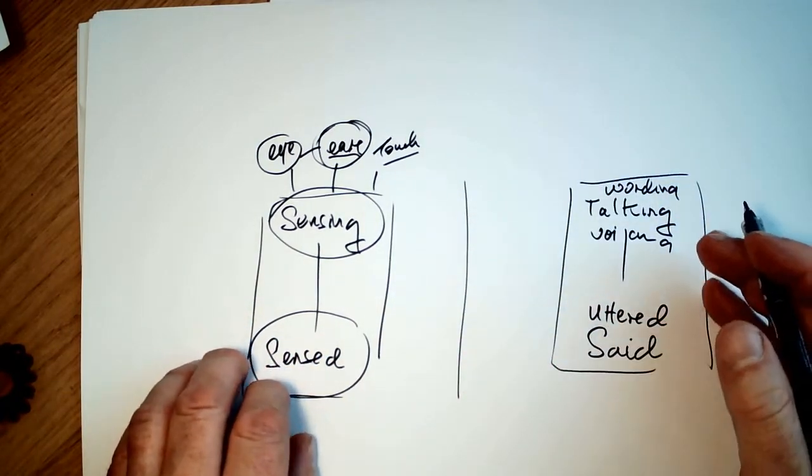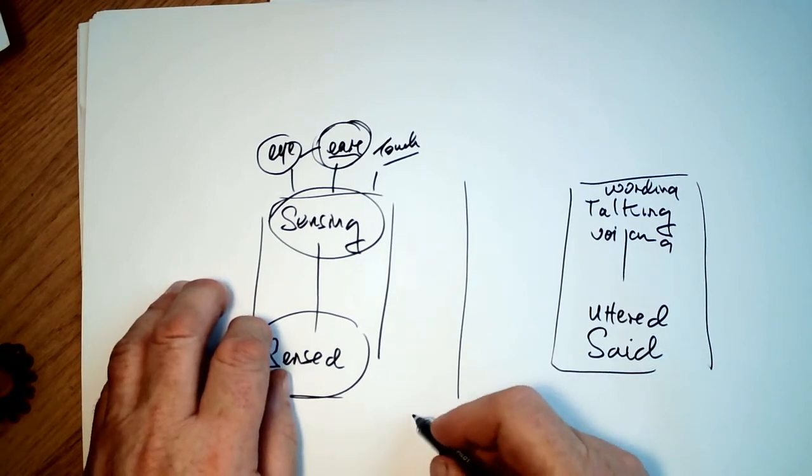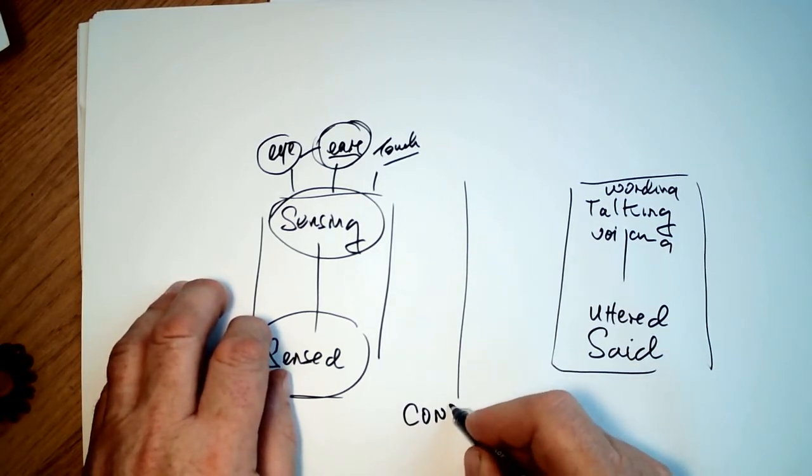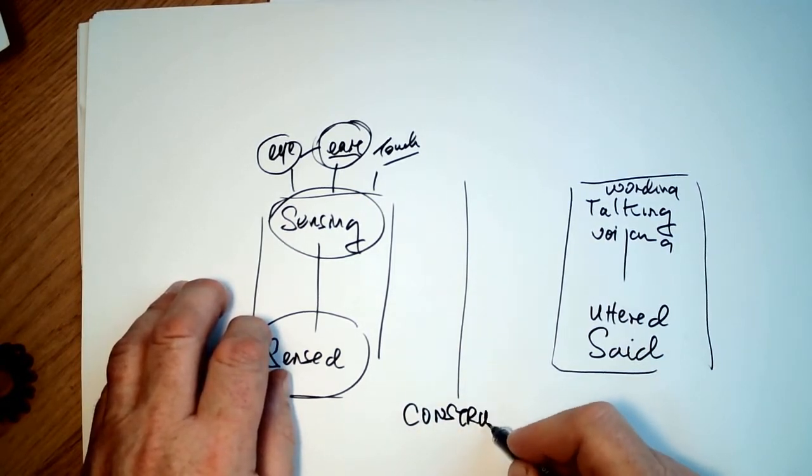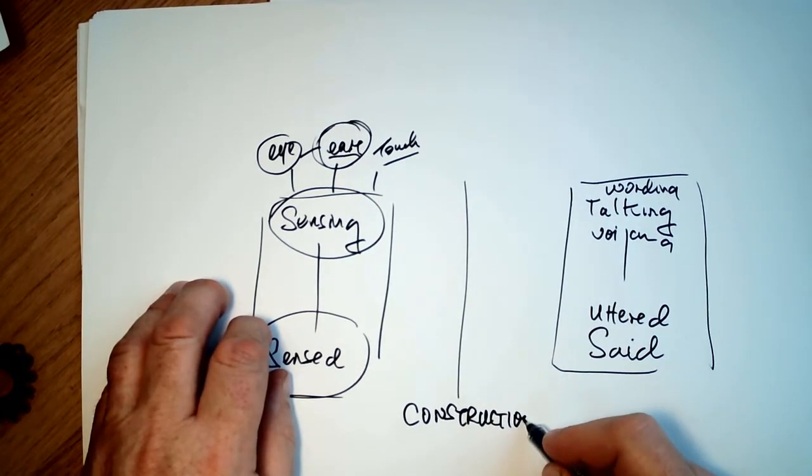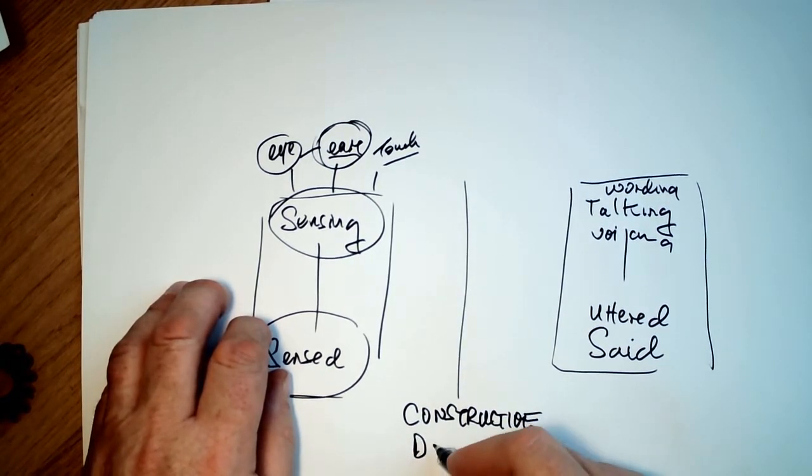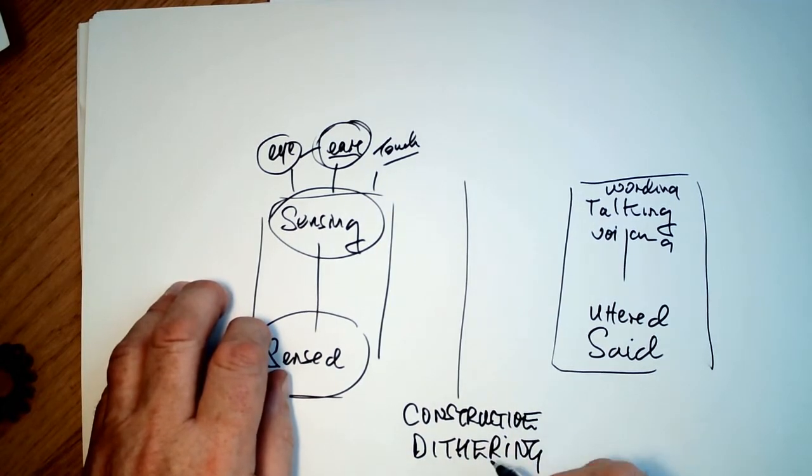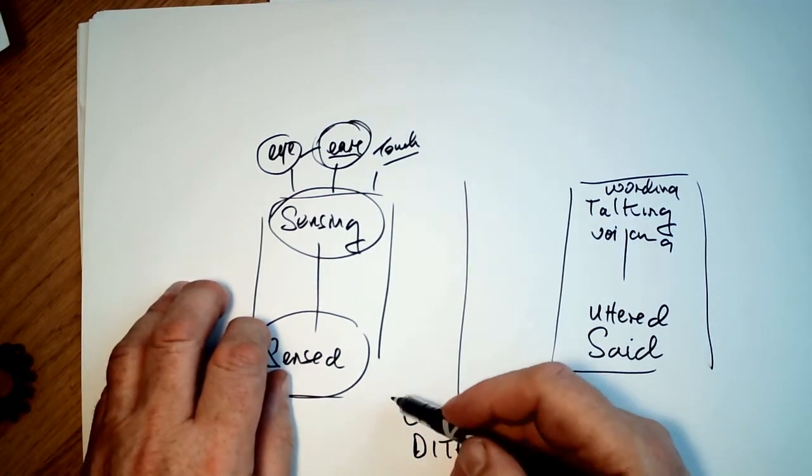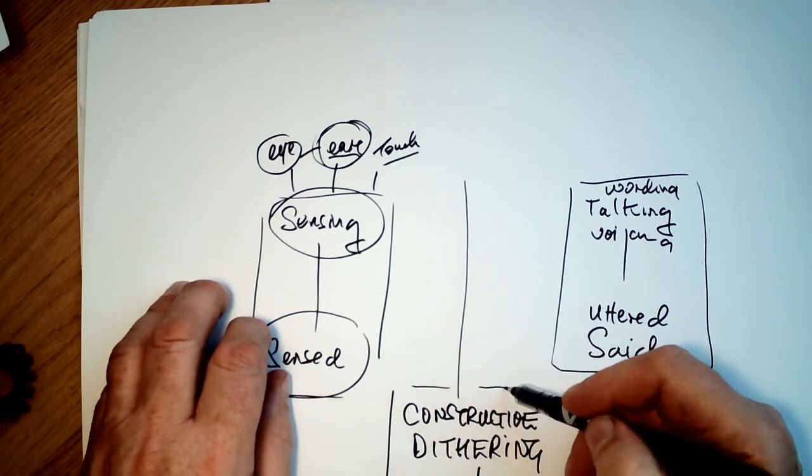And for me, the business of mapping and talking is about creating a space for what I like to call constructive dithering. There's an enormous pressure for us to sort out what we're saying, to get the words right and not to dither or fumble or say the wrong thing.